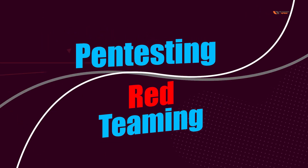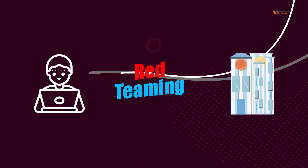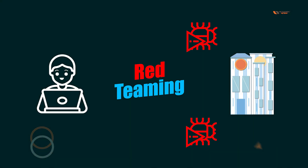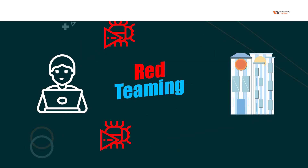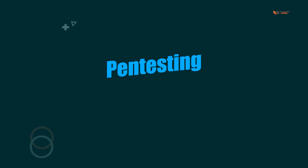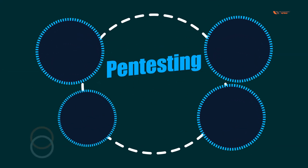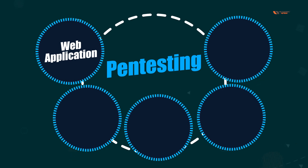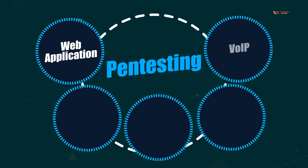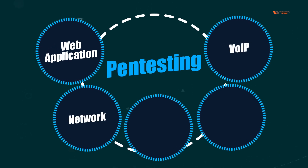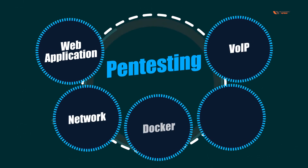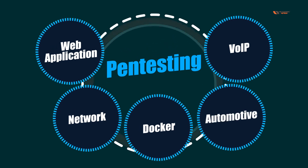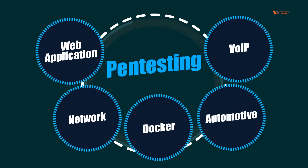Pentesting is very similar to red teaming, but red teaming is broader in scope. Even inside pentesting there can be multiple subtypes — for example, web application pentesting, WiFi pentesting, network pentesting, Docker pentesting, automotive pentesting, and many others.